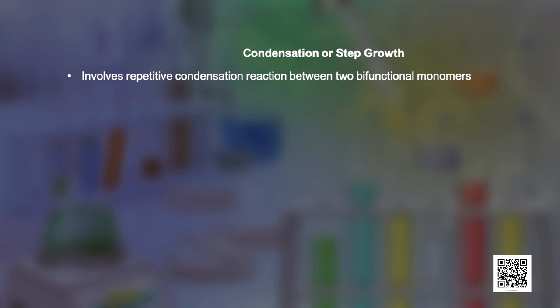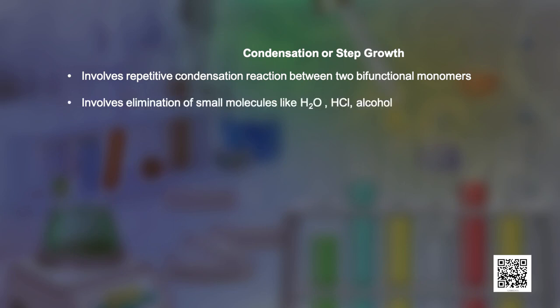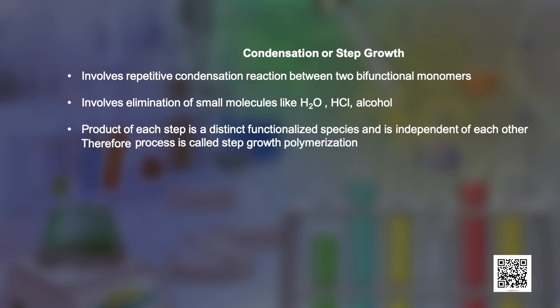Condensation or step growth polymerization generally involves a repetitive condensation reaction between two bifunctional monomers. These polymerization reactions may result in the loss of some simple molecules such as water or alcohol, leading to the formation of high molecular mass condensation polymers. In these reactions the product of each step is again a bifunctional species and the sequence of condensation goes on. Since each step produces a distinct functionalized species and is independent of each other, the process is also called step growth polymerization.